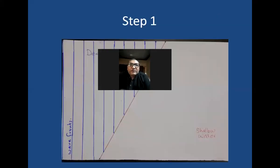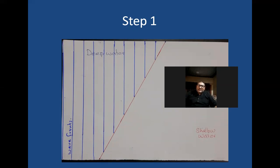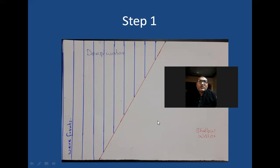Here you can see that we have a situation shown to you. The blue color lines are basically representing the wavefronts in the deep water, and this red color line is basically the boundary — after this, the water is shallow. So we have to learn how to draw the wavefronts in the shallow water.